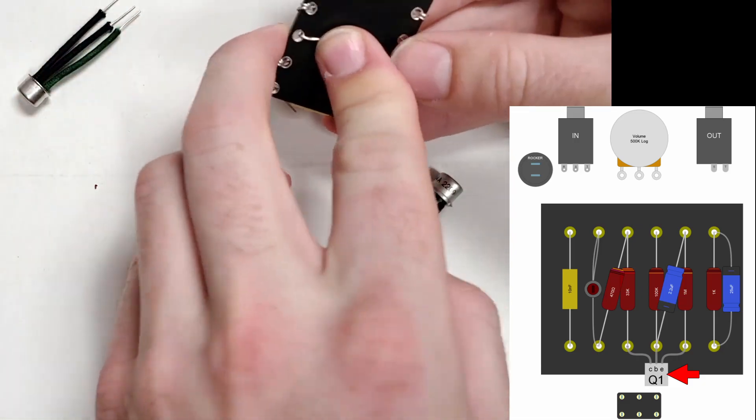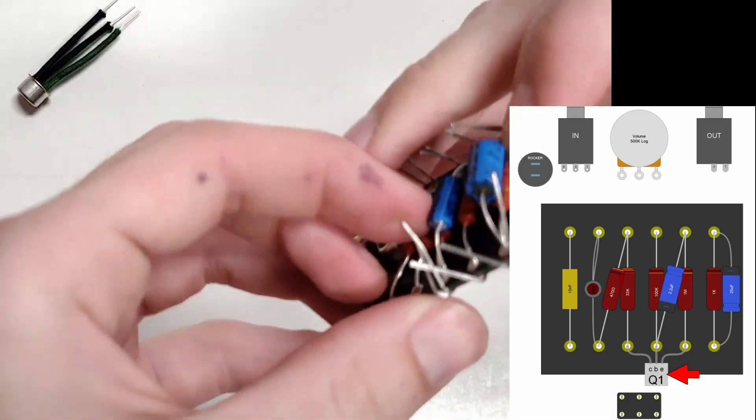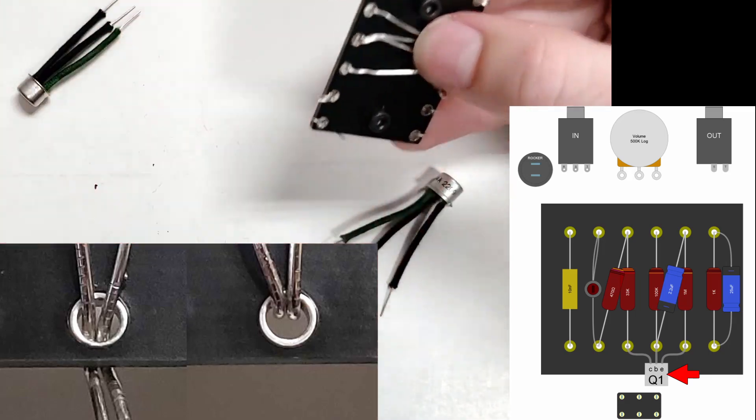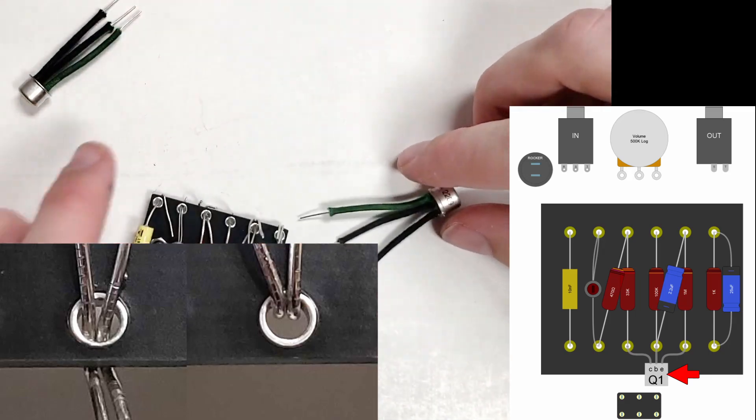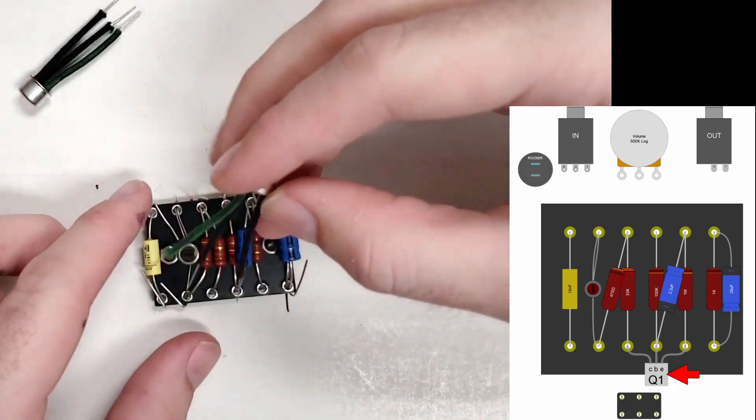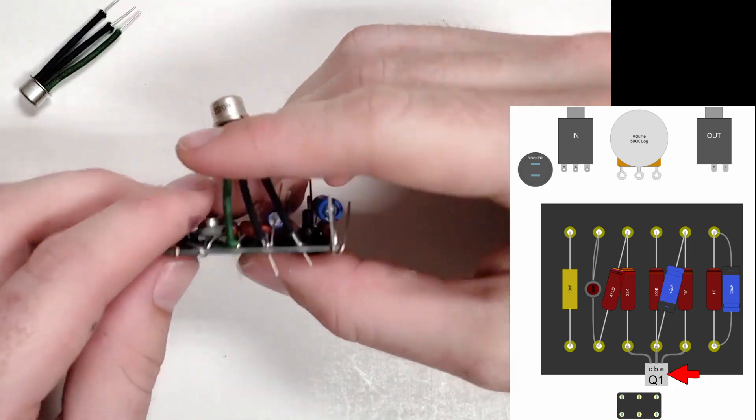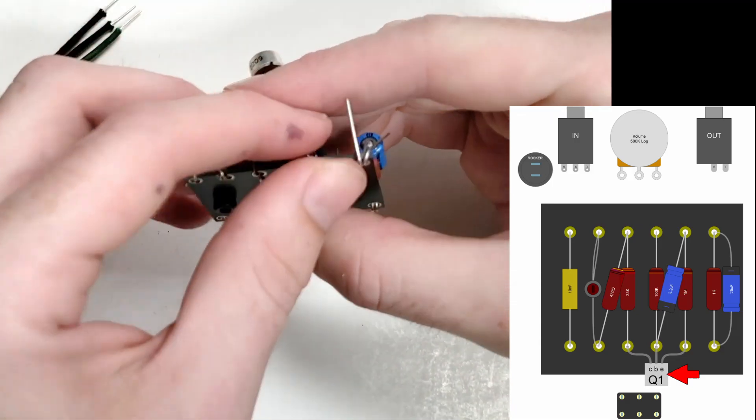Before installing the transistors, I'm bending some of the component leads back towards the center of the board. This can leave more room for additional components to be inserted into the eyelets, which is helpful when adding a third or fourth lead or wire. The transistor leads can be installed similarly to the resistors, simply by inserting the leads and bending them outward to temporarily secure them.